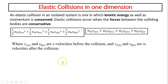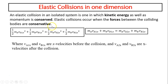An elastic collision in an isolated system is one in which kinetic energy as well as momentum is conserved. So there are two equations: conservation of kinetic energy and conservation of momentum. Elastic collision only happens when the forces between the colliding bodies are conservative, such as gravity between the two objects or the force of springs between the two objects.